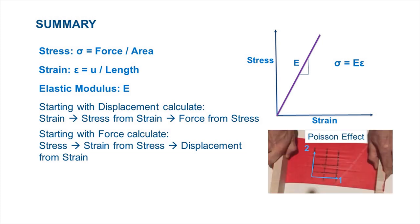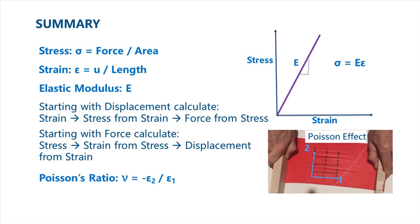We introduced the phenomenon called the Poisson effect, and we defined Poisson's ratio as the strain in the transverse direction divided by the strain in the direction that we apply the displacement.